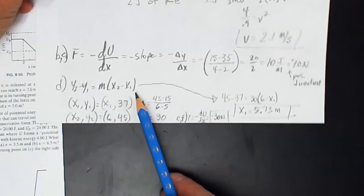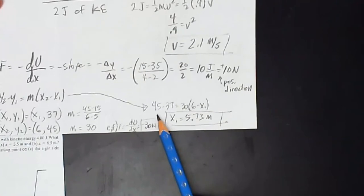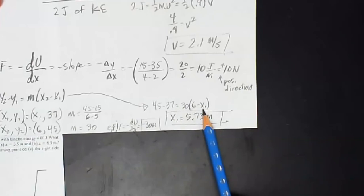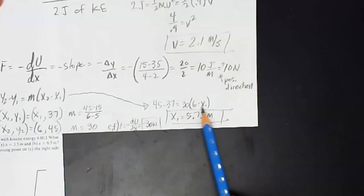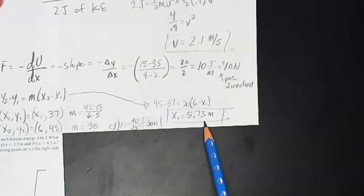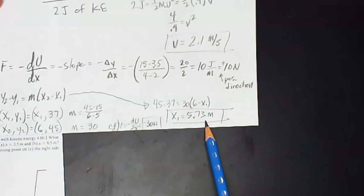So plugging into my point-slope formula, 45 minus 37 are my y values. 6 is my x value. There's my other unknown x value that I'm trying to find. The slope was 30. Solving for x, I see that it will reach 5.73 meters on the x-axis.